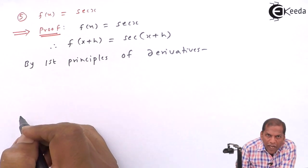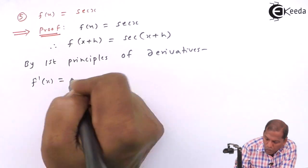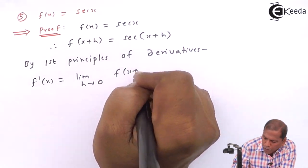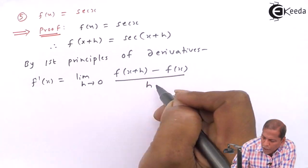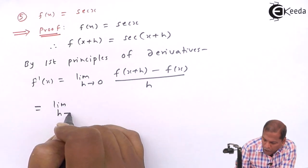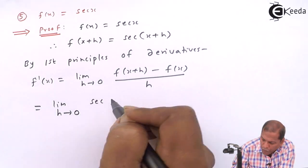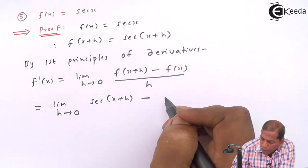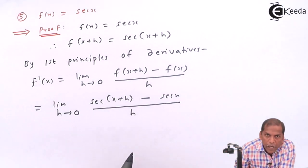we have f'(x) is equal to limit h tends to 0 of f(x + h) minus f(x), whole thing divided by h. That is equal to limit h tends to 0, where for f(x + h) we substitute sec(x + h), minus for f(x) we write sec(x), and then the whole thing divided by h.